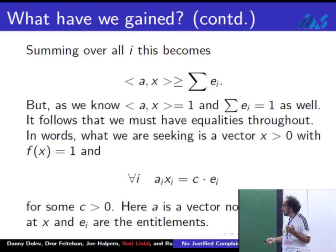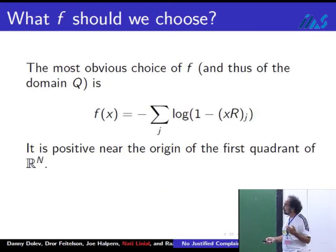In fact, now a_i depends on x. A is the vector, a is the normal to the upper boundary of Q at the point x. It's a good thing to repeat it. A is the normal to the upper boundary of Q at the point x. What f are we going to choose? That's the most natural choice. You can make many such choices.